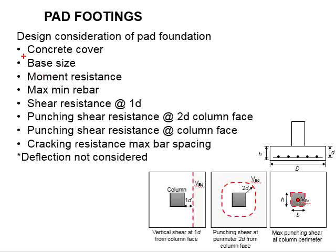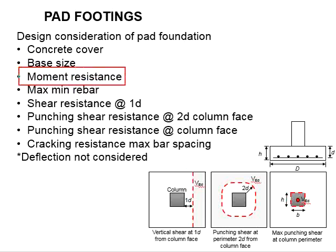After you have determined the size of the base, you need to calculate the bearing stress acting on the pad footing due to the soil bearing pressure, which is calculated in the form of the ultimate limit state. That means when calculating the base size, you will use a factor of safety of 1.0.